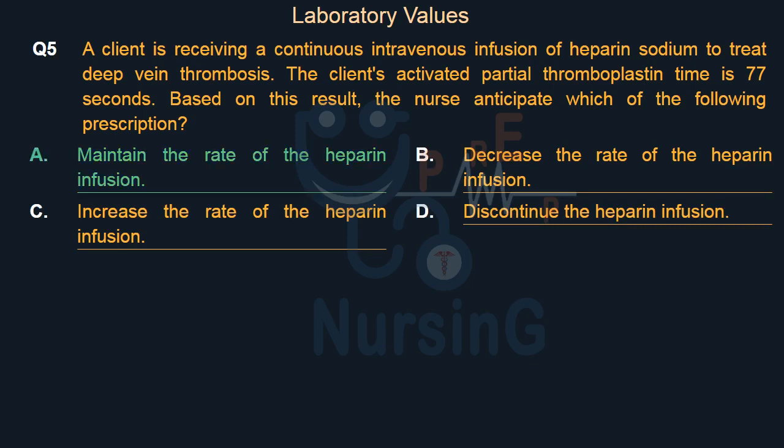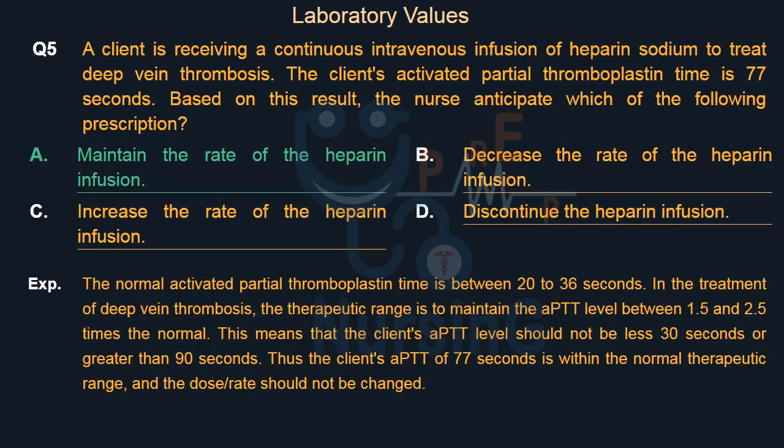The right answer is Option A: Maintain the rate of the heparin infusion. The normal aPTT is between 20 to 36 seconds. In the treatment of deep vein thrombosis, the therapeutic range is to maintain the aPTT level between 1.5 and 2.5 times the normal, meaning the aPTT should not be less than 30 seconds or greater than 90 seconds. Thus, the client's aPTT of 77 seconds is within the normal therapeutic range, and the dose/rate should not be changed.